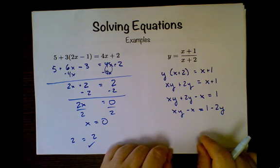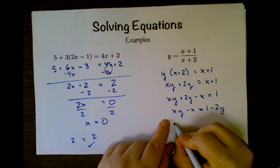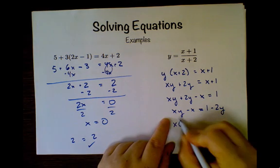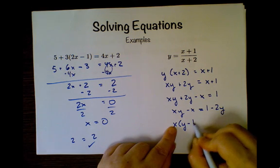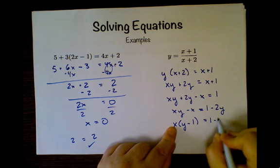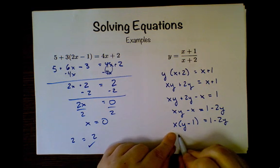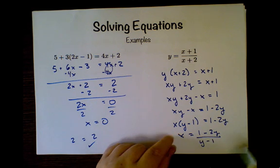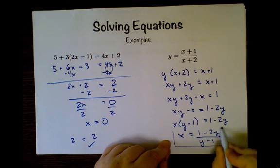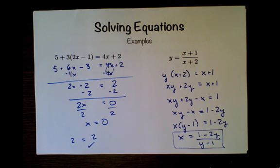This is where the sneakiness comes in. These both have x in them, so I'm going to factor out x. So I have x times y minus 1, and this is x times 1, equals 1 minus 2y. And now I'm just going to divide both sides by y minus 1, so x equals 1 minus 2y divided by y minus 1. That was sneaky and awesome, huh?